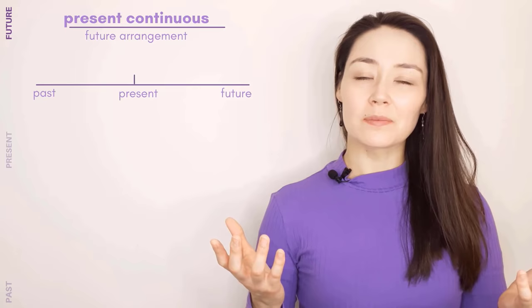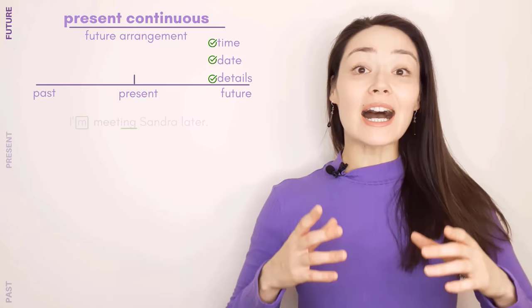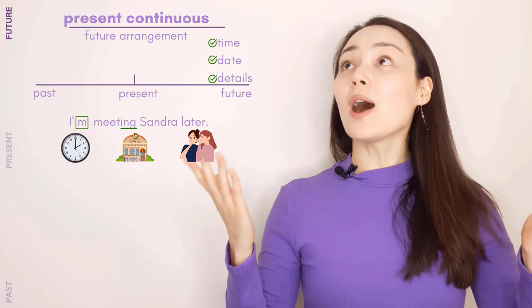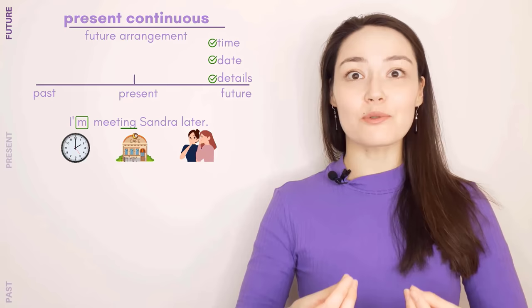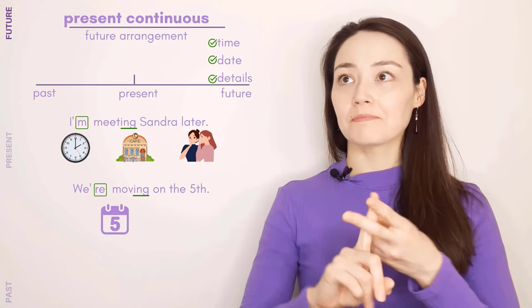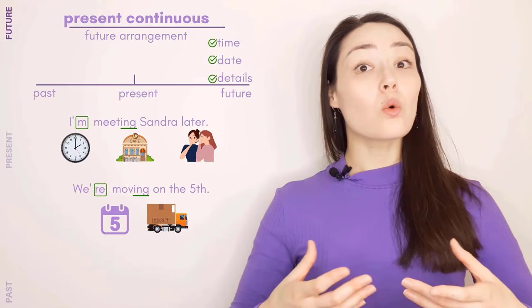Present continuous for a future arrangement. What do I mean by arrangement? You have the time, the date, and all the details organized. I'm meeting Sandra later — both Sandra and I know when (two o'clock), where (the cafe on Harper Street), and why (because we want to gossip). Everything has been organized, so use the present continuous even for the future. We're moving on the 5th. I have the date, I've already booked the moving truck, everything has been organized. What are you doing over Christmas? I'm spending Christmas with my parents.